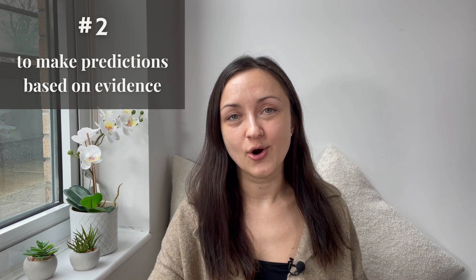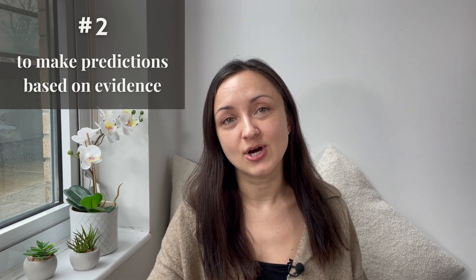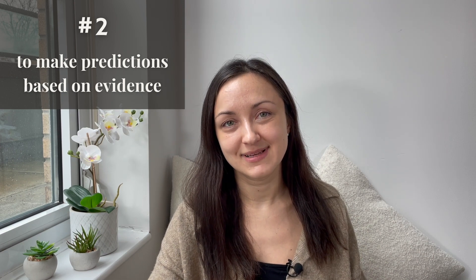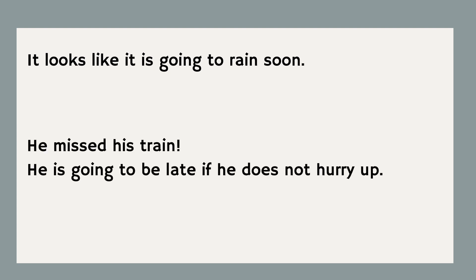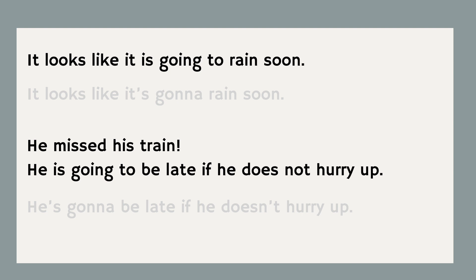The second use of 'going to' is to make predictions based on evidence or observations. Here, we can also reduce 'going to' to 'gonna.' To make these sentences informal, I will use contractions: 'it is' becomes 'it's,' 'he is' becomes 'he's,' 'does not' becomes 'doesn't,' and of course 'going to' becomes 'gonna.'